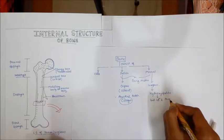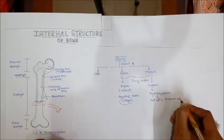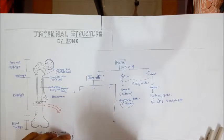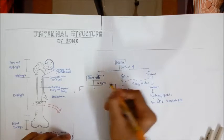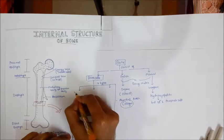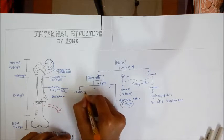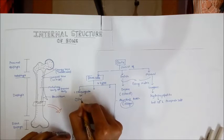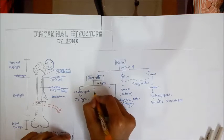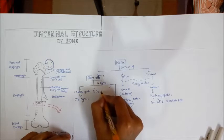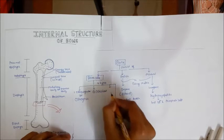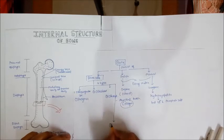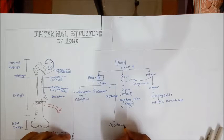There are four types of bone cells found in bone tissue: number one, osteoprogenitor or osteogenic cells; number two, osteoblasts; number three, osteocytes; and number four, osteoclasts.